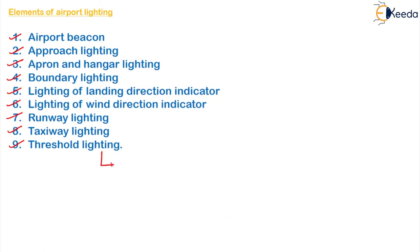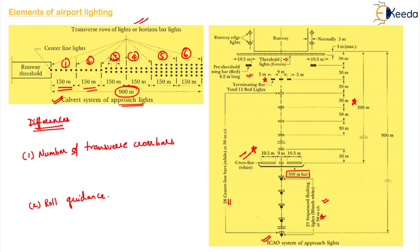The final element is threshold lighting. The identification of the threshold is a major factor in the pilot's decision to land or not. The region near the threshold is given special lighting treatment. A complete line of green lights extending across the entire width of the runway should be provided, of semi-flush type not protruding more than 12 centimeters for large airports. For small airports, only 4 lights on either side of the threshold of elevated type are used. Threshold lights at the entrance of the runway are green, while those at the edge or end of the runway are red.